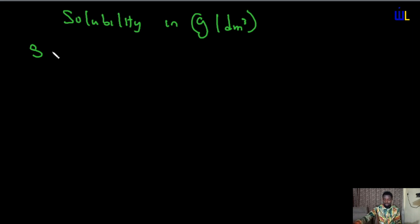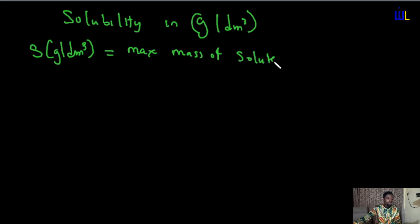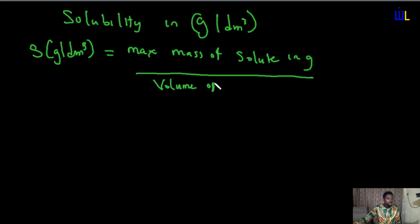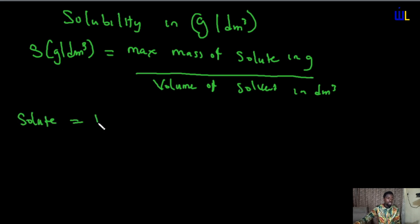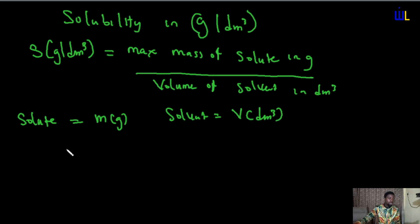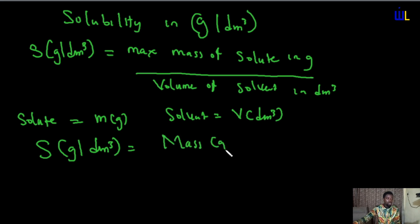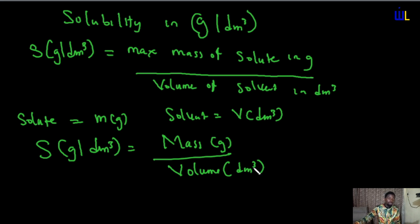Just as we had solubility in mol per dm³ under different scenarios, the same thing applies here, but in this case we have fewer formulas. Solubility in gram per dm³ can simply be expressed as the maximum mass of solute in gram divided by the volume of solvent in dm³. So if your solute is given in mass in gram and solvent is given in volume in dm³, solubility in gram per dm³ is simply mass of solute in gram divided by volume of solvent in dm³.